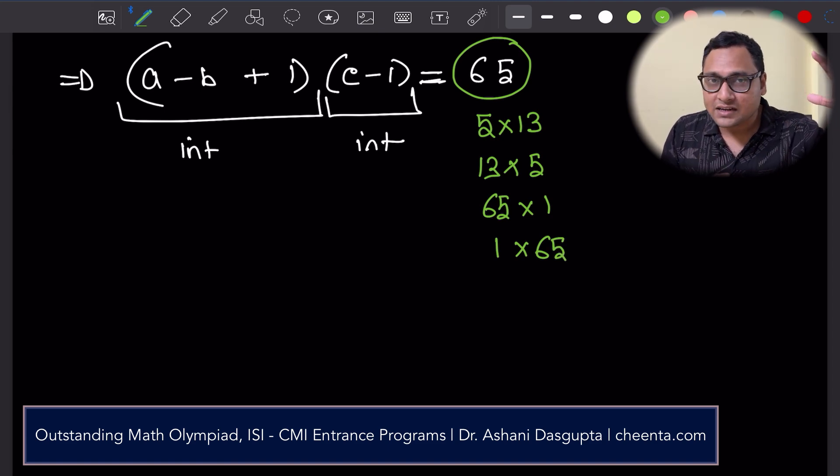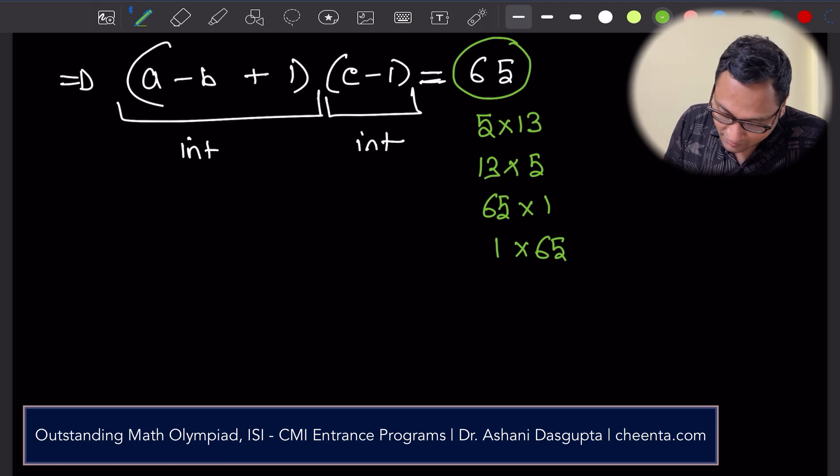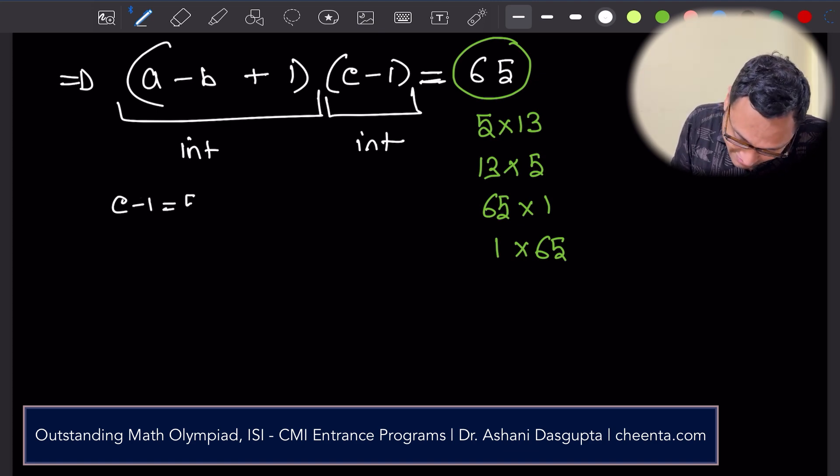This additional condition that a, b, and c are positive integers, we are just using it here. So now we can compare component-wise.